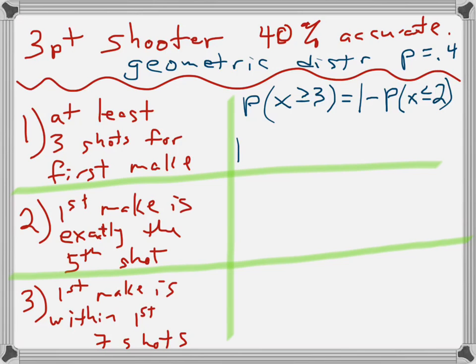So, on your calculator, this is one minus geometric CDF, 0.4, 2.